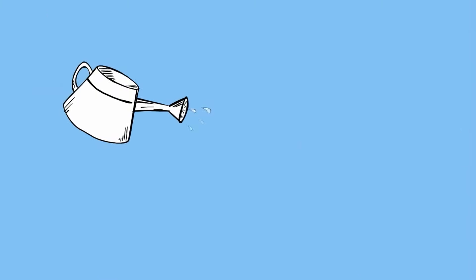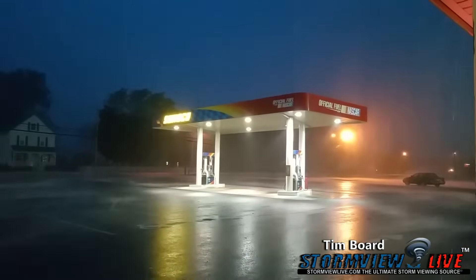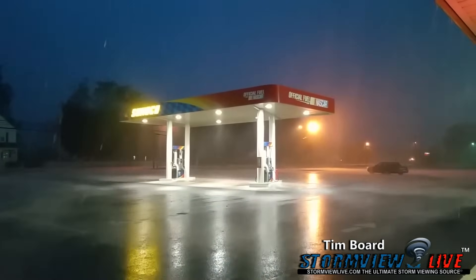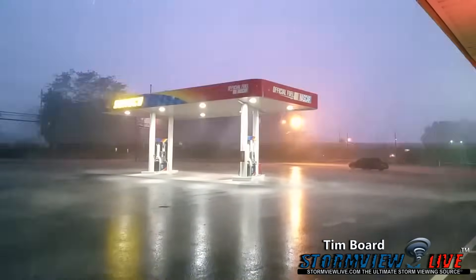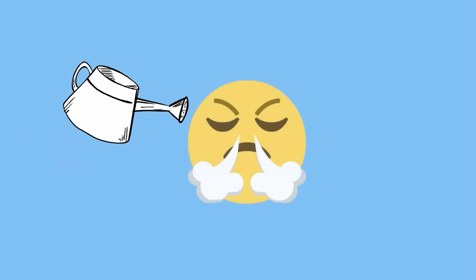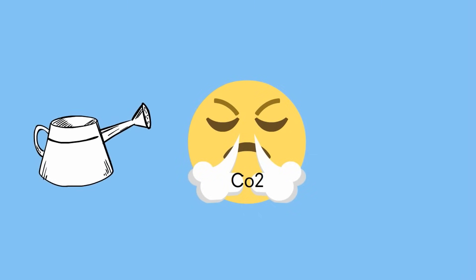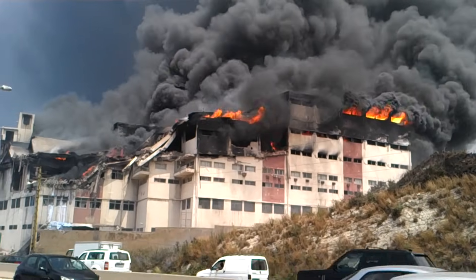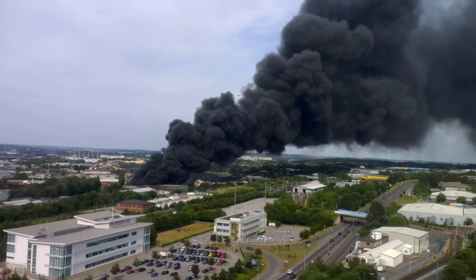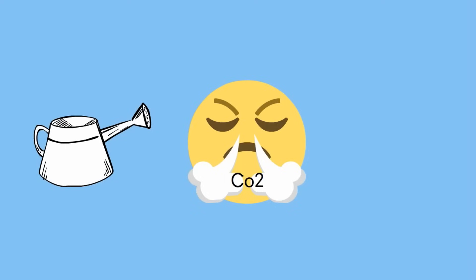In order for photosynthesis to take place, a plant needs three things: water, like you see in this rainstorm; carbon dioxide, like you see being released into the atmosphere when something burns; and light.